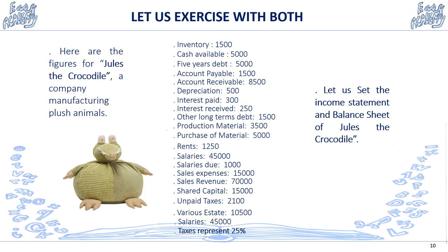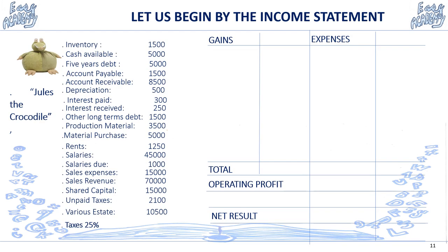Now let's put together the balance sheet and the income statement. Here is another exercise: a company named Jules the Crocodile. Jules the Crocodile has various figures including inventory and taxes. We'll need to set up both the income statement and the balance sheet, beginning as usual with the income statement. Take a look at those figures — pause the video and try it on your own.